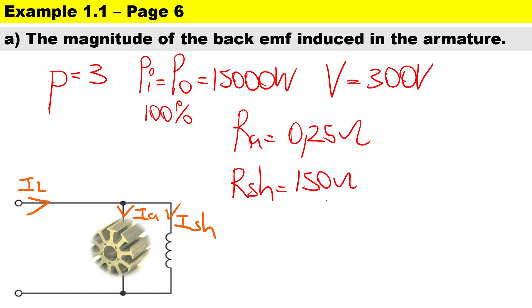This machine is lap wound, so therefore c equals 2 times the number of pole pairs, 2 times 3. Therefore there are 6 parallel paths, which is the same as the number of poles for lap wound.